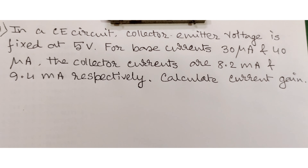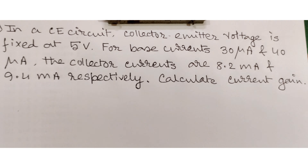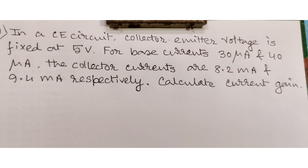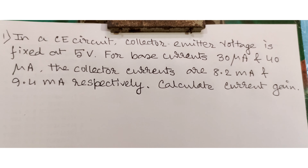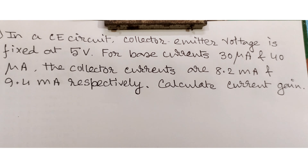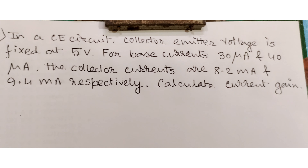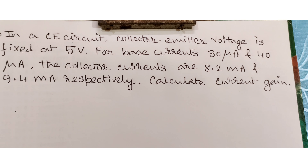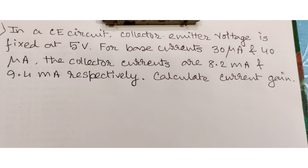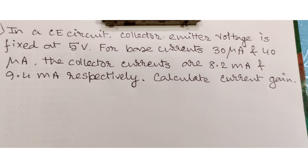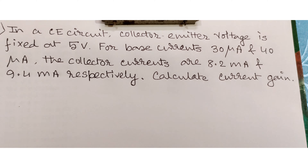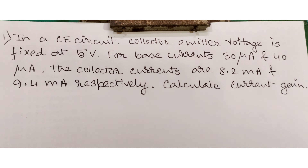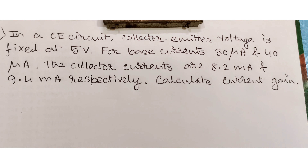Welcome back. In this video we will try to solve some problems based on current amplification factor or current gain, collector current, base current, and emitter current. The first problem: in a common emitter (CE) circuit, the collector-emitter voltage is fixed at 5 volts. For base currents of 30 microamperes to 40 microamperes, the collector currents are 8.2 milliamperes and 9.4 milliamperes respectively. Calculate the current gain.